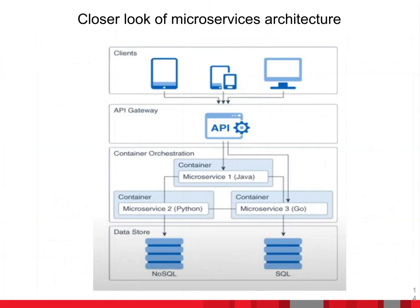Looking closer at the microservices architecture: each service is deployed into a single container — one container can use Java, another Python, another Go — and they talk to different separate databases. Once we have separate containers, we require a separate orchestration management platform such as OpenShift or Kubernetes. We also need an API gateway as an abstraction layer on top of your integration or middleware area, then connect to different clients for an omni-channel experience.